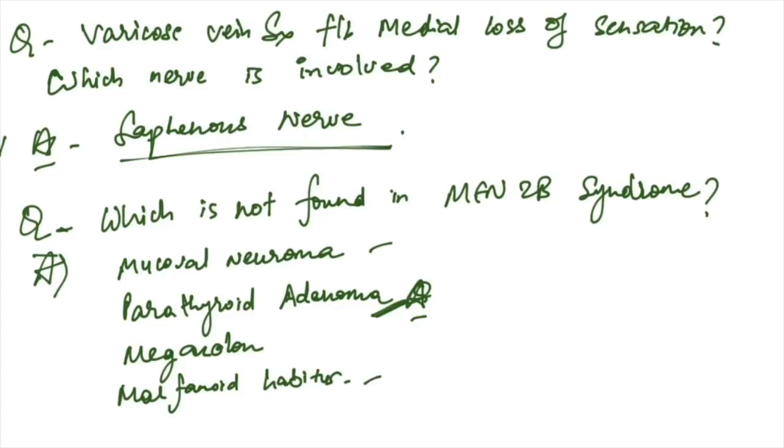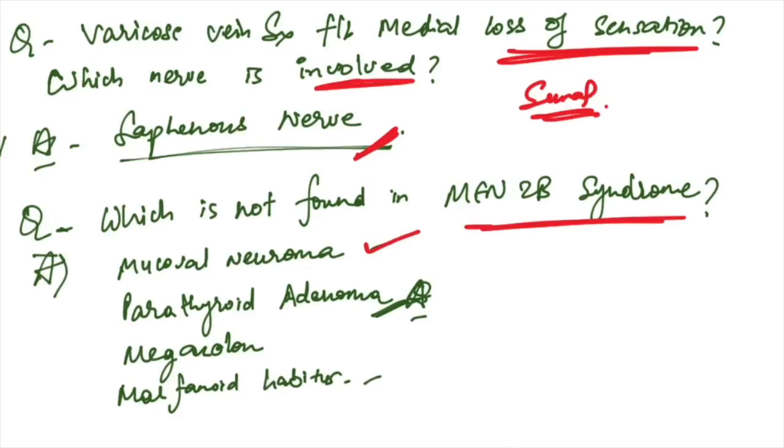Varicose vein surgery followed by patient came with history of varicose vein surgery and medial loss of sensation in the legs, numbness in the medial side. Which nerve is involved? Saphenous nerve is involved, not sural nerve. Which is not found in MEN 2B syndrome? In MEN 2B syndrome there is mucosal neuroma and marfanoid habitus, and megacolon can be seen. Parathyroid adenomas are associated with MEN 2A syndrome, not 2B syndrome.